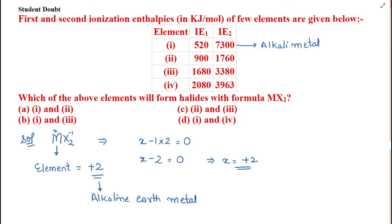Looking at the fourth element, noble gases usually have very high ionization enthalpies. In this case, both the first and second ionization enthalpies are high, so element four may be a noble gas.